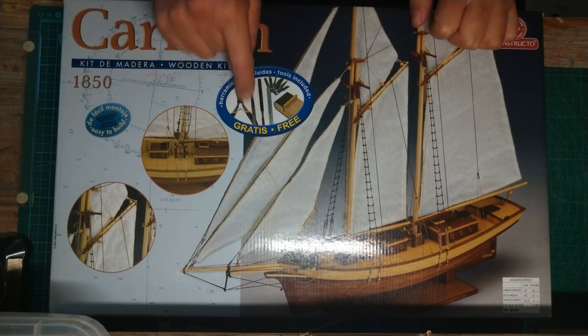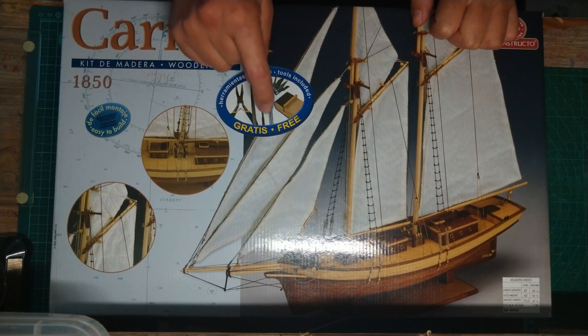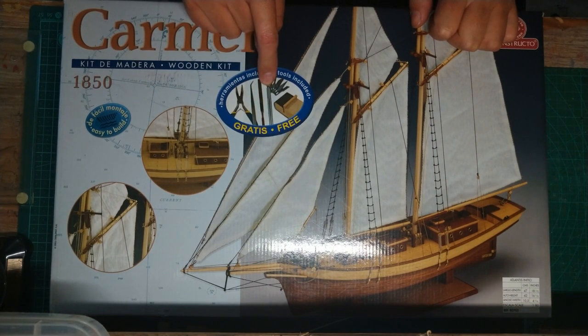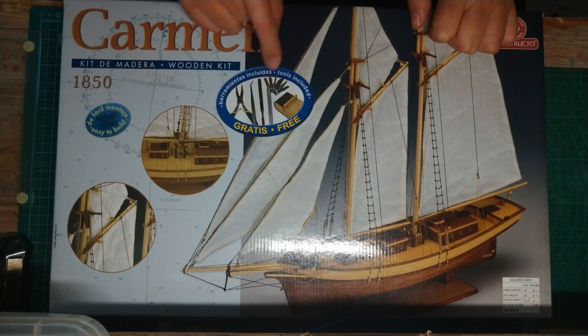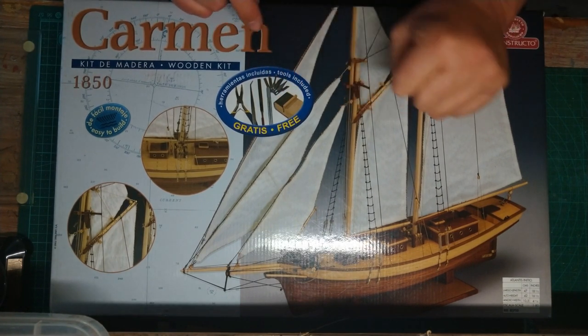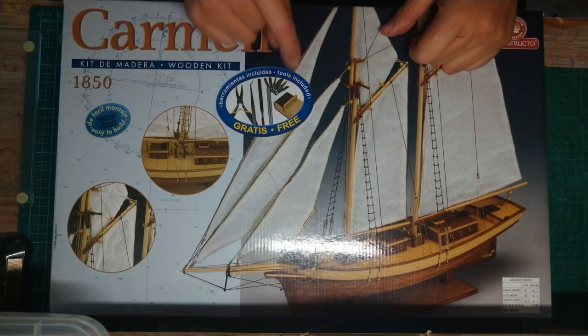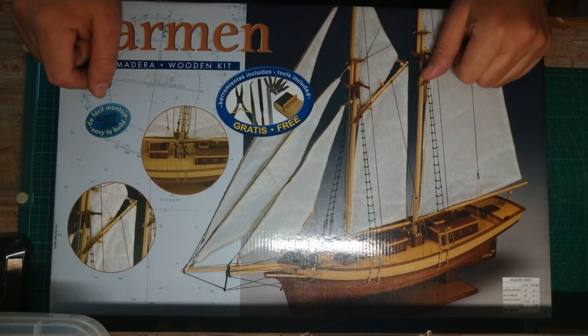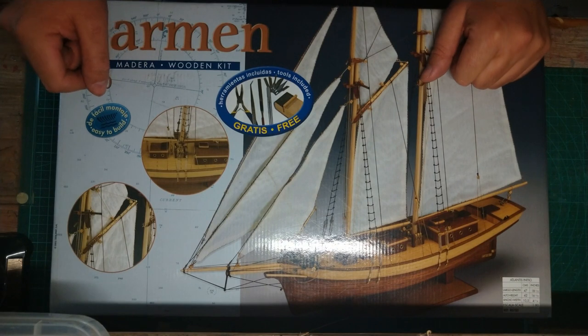You also got an artist knife, very sharp knife. And then it seems like you've got a block here that you can actually use to model and to get rid of all the burrs and whatever on the model kit itself.